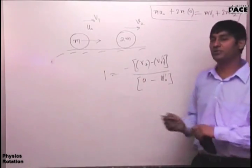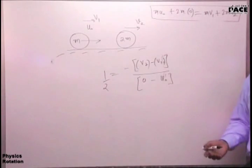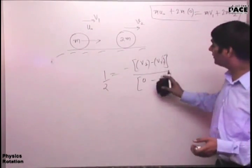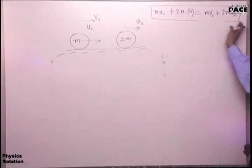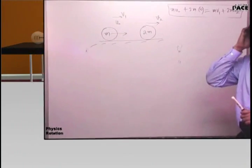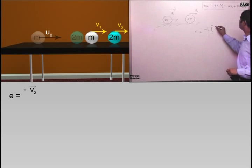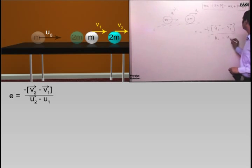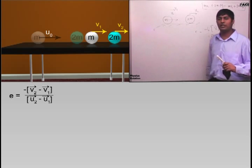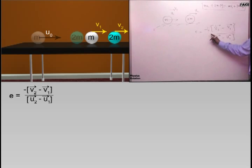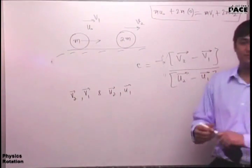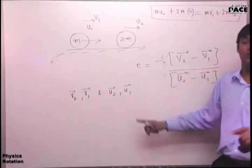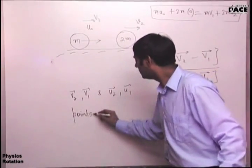If the collision is inelastic with coefficient of restitution equal to half, you use that equation. For a perfectly inelastic collision you don't even need the restitution equation - only momentum conservation, because the two final velocities will be the same. V₂, v₁ and u₂, u₁ are the final and the initial velocities of the points of collision.